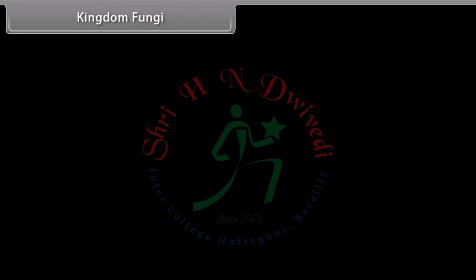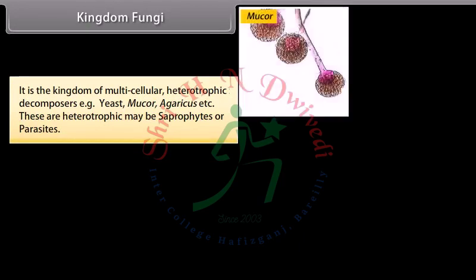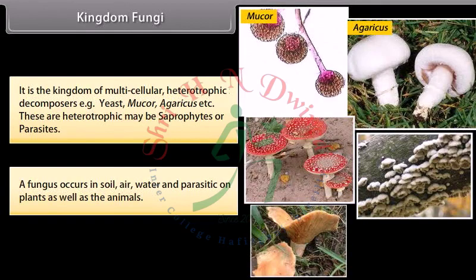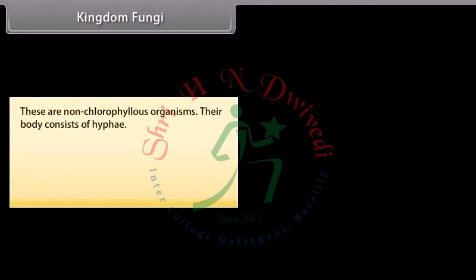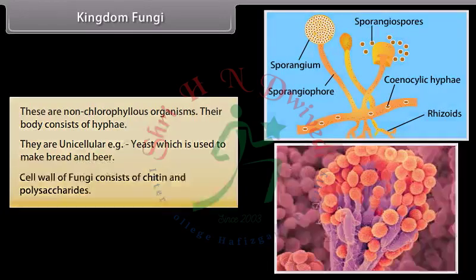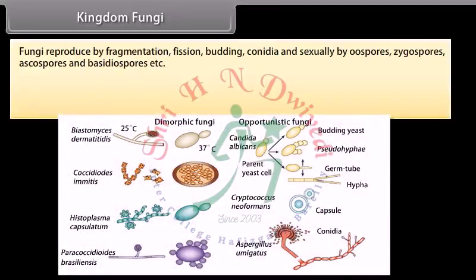Kingdom Fungi is the kingdom of multicellular heterotrophic decomposers. Examples include yeast, mucor, agaricus, etc. These heterotrophs may be saprophytes or parasites. Fungi occur in soil, air, water and as parasites on plants and animals. They are non-chlorophyllous organisms and their body consists of hyphae. Yeast is unicellular and is used to make bread and beer. The cell wall of fungi consists of chitin and polysaccharides. Fungi make symbiotic associations with algae in lichens. Fungi reproduce by fragmentation, fission, budding, conidia, and sexually by oospores, zygospores, ascospores, and basidiospores.